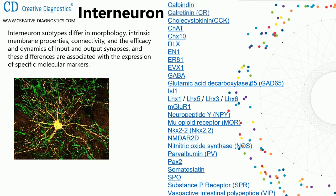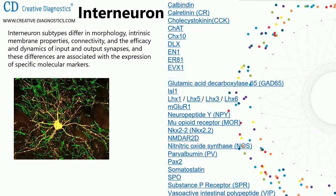Interneuron markers include calretinin, cholecystokinin, ChAT, CHX10, DLX, EN1, ER81, EVX-1, GABA, glutamic acid decarboxylase 65 (GAD65), ISL-1, LHX1, LHX3, LHX6, and NR1 (GluR1).